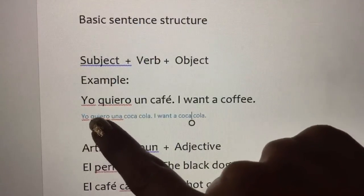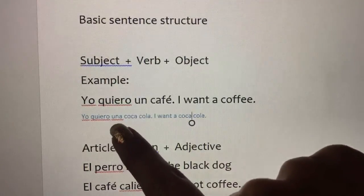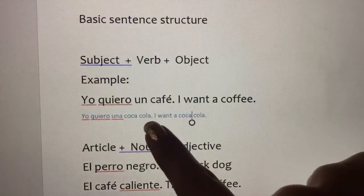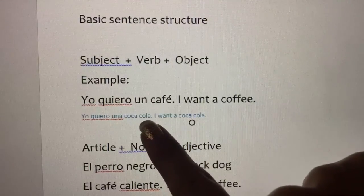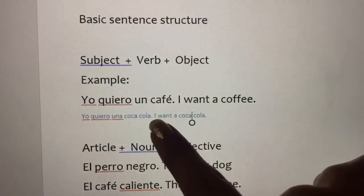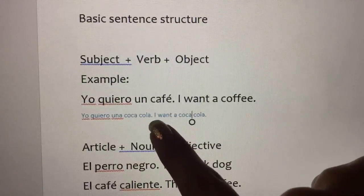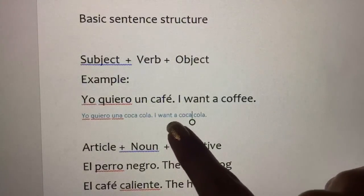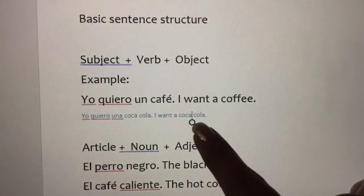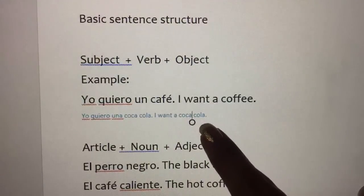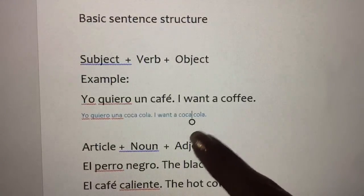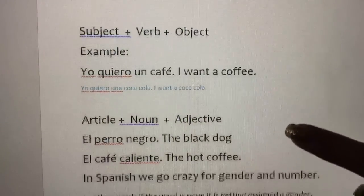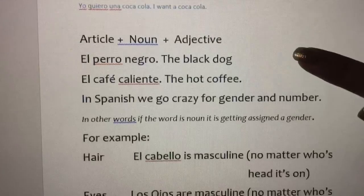Here's another one: Yo, subject, quiero, verb, una coca-cola, object. I, subject, want, verb, a coca-cola, object. So that's the basic sentence structure.